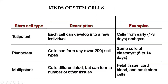Kinds of stem cells: totipotent stem cells, where each cell can develop into a new cell; pluripotent stem cells, where cells can form any types of cell types. Totipotent cells are usually found in embryos about one to three days after fertilization, and pluripotent about five to fourteen days.